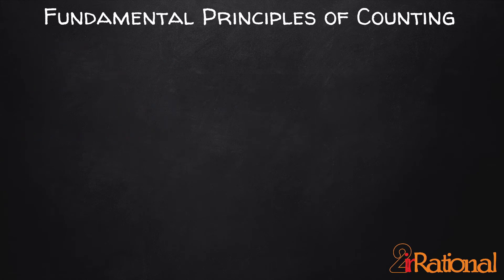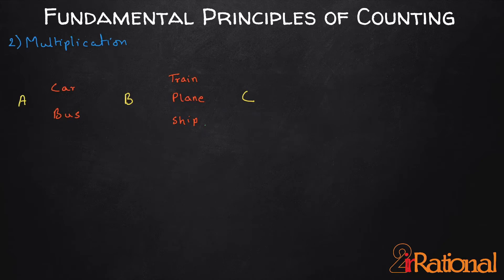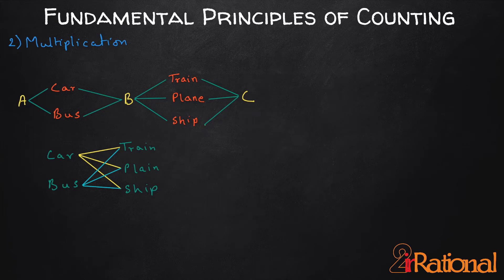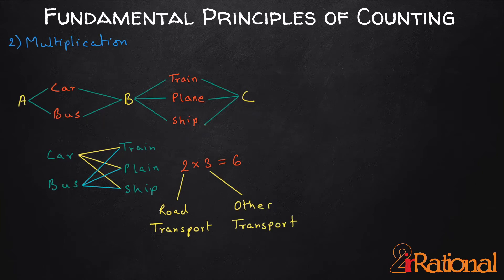The second principle is multiplication. For example, if I move from A to B and then B to C, where I can only use road transport from A to B and other transports from B to C, I can take car then train, car then plane, or car then ship — and similarly 3 options with bus. In total I have 6 options, which is 2 × 3: the number of road transport options multiplied by the number of other transport options. When we do multiple jobs together, we multiply the ways of doing them.